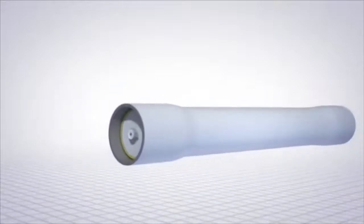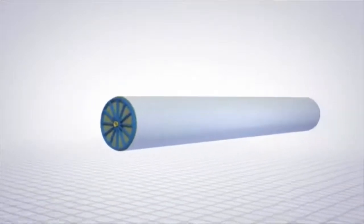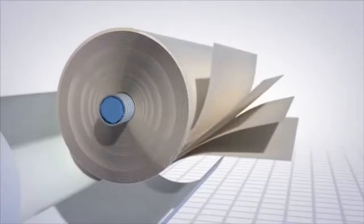Rolls of membrane sheets are wound into cylinder shaped elements. There are several elements inside each long pressure vessel.